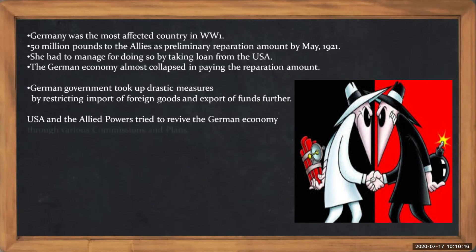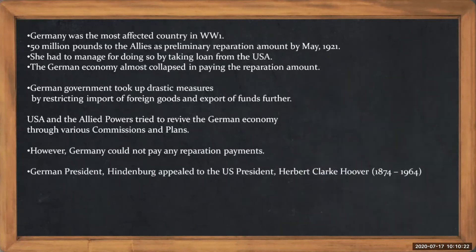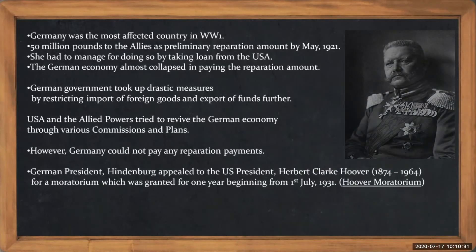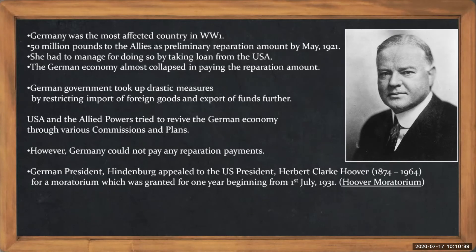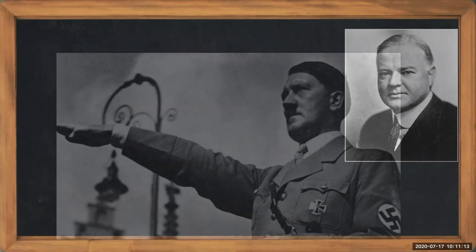They tried to revive Germany through various plans but it could not make any payments. The German president at that time, Hindenburg, appealed or requested to the American president, Herbert Clark Hoover. So they gave a moratorium. Moratorium means a pause — it's like hitting the pause button. For one year they agreed to give some relaxation. If that was not there, Germany would have completely collapsed.